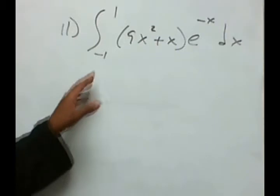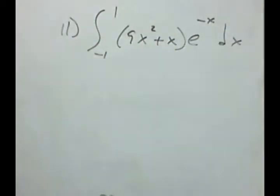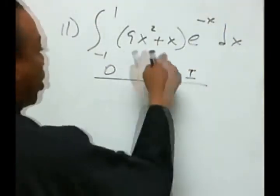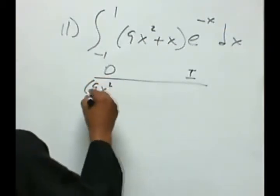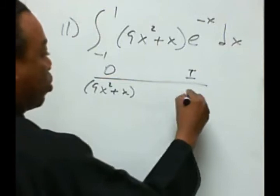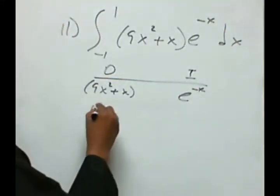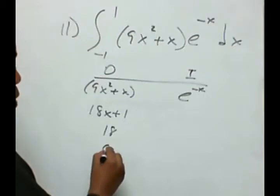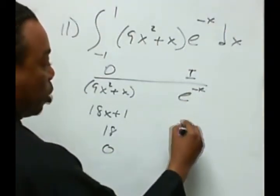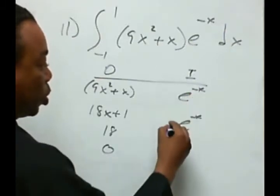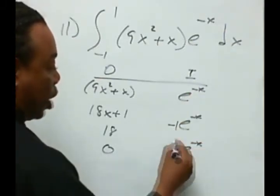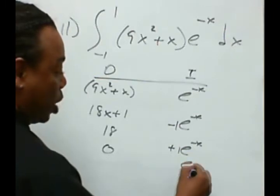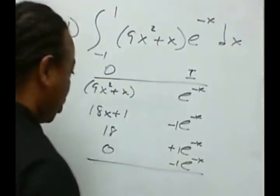Okay, number 11. We're evaluating the area between negative 1 and 1 of this function. To take the anti-derivative, I'm going to use integration by parts. Let's take the polynomial 9x squared plus x for the derivative, and the anti-derivative of e to the negative x. The derivative of this will be 18x plus 1, the next derivative will be 18, and the next derivative will be 0. The anti-derivative of e to the negative x will be e to the negative x times the reciprocal of the derivative, which is negative 1. The next anti-derivative will be e to the negative x times positive 1, and the next anti-derivative will be e to the negative x times negative 1.